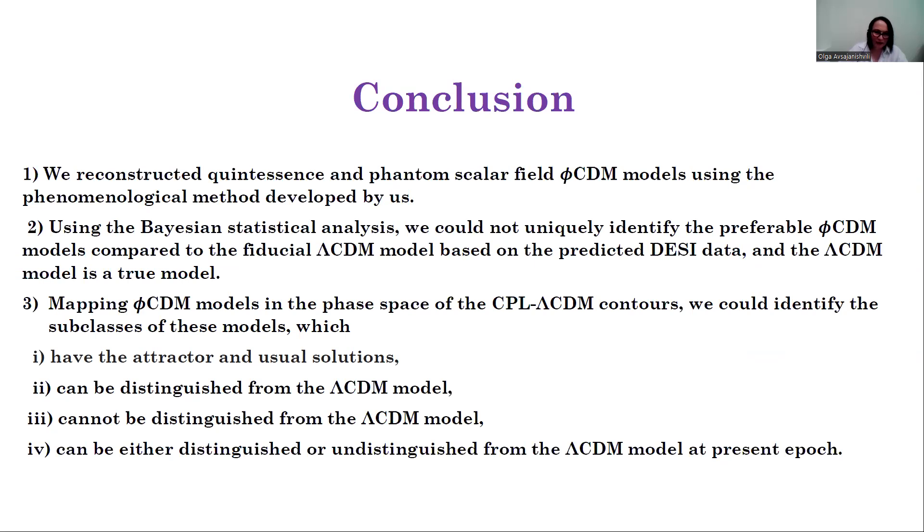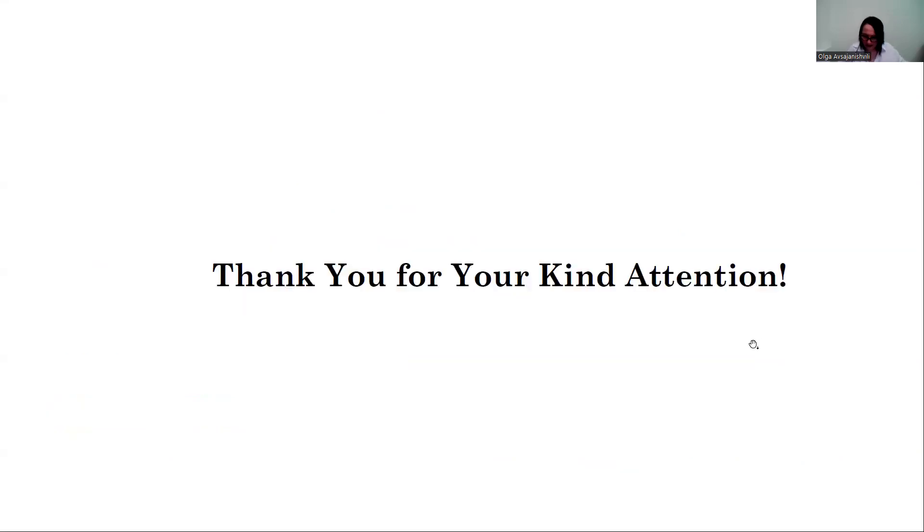Mapping φCDM models in the phase space of the CPL-ΛCDM contours, we could identify the subclasses of these models which have attractor and usual solutions, can be distinguished, cannot be distinguished, or can be either distinguished or undistinguished from the ΛCDM model at present epoch. Thank you for your kind attention.